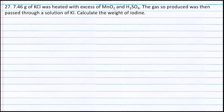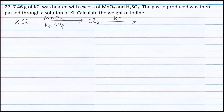According to this question, potassium chloride in the presence of MnO₂ and H₂SO₄ changes into chlorine gas, and chlorine in the presence of potassium iodide forms iodine. The formation of chlorine from potassium chloride is the first part of the reaction, and the formation of iodine from chlorine in the presence of potassium iodide is the second part of the reaction.